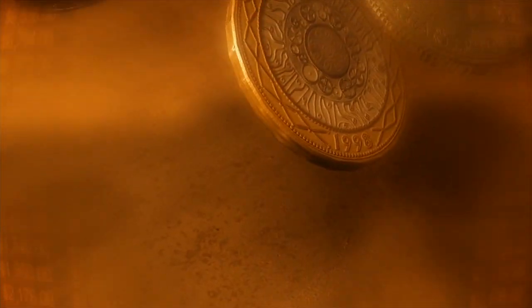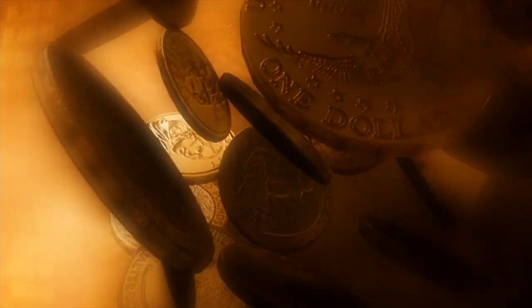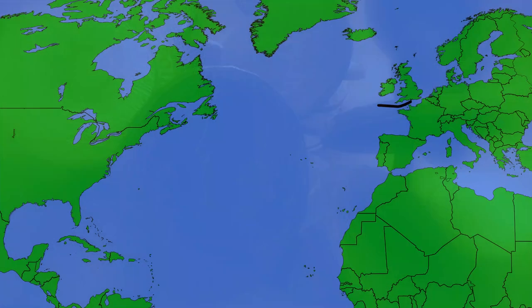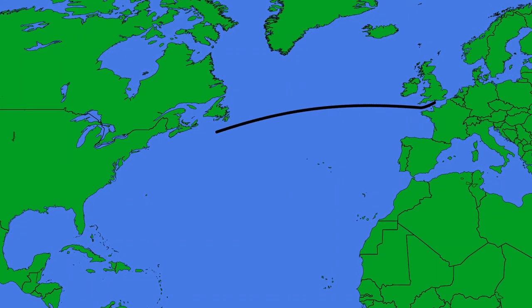With fuel coming in as one of the biggest expenses, obviously ships normally take the shortest route possible. So why do I use curved lines on these tracks?